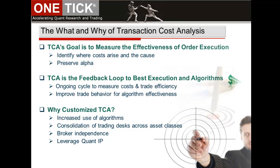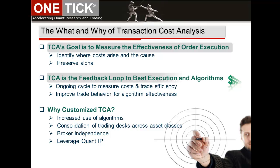To lay down some ground rules: TCA's goal is to measure and analyze the factors which affect the price of an order. It is a feedback loop to identify inefficiencies so improvements can be made in trading styles, algorithm logic, algorithm aggressiveness, and broker selection for the express purpose of preserving alpha.